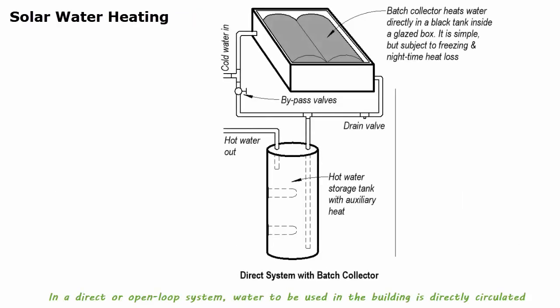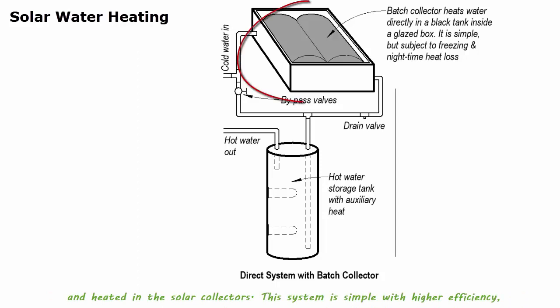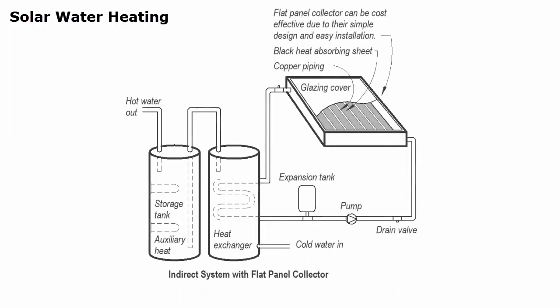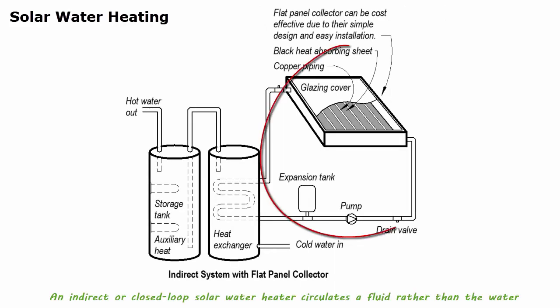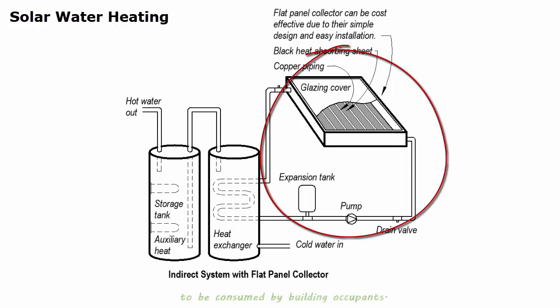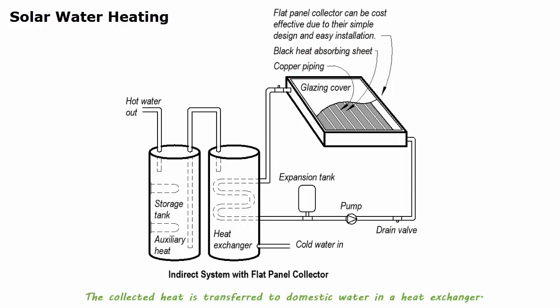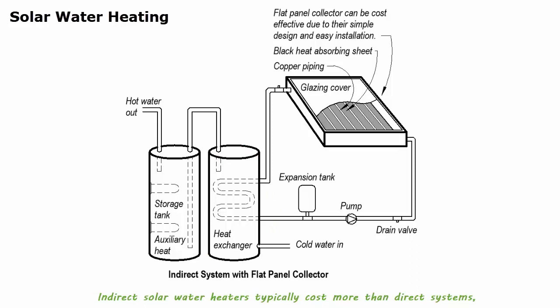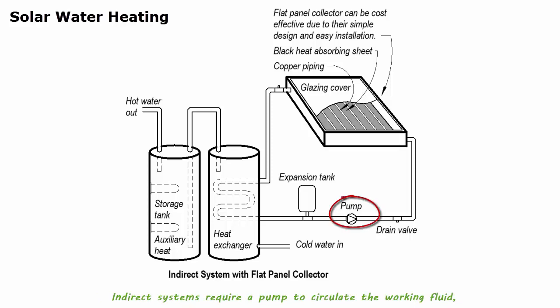In a direct or open loop system, water to be used in the building is directly circulated and heated in the solar collectors. This system is simple with higher efficiency, but water is subject to freezing and potential contamination. An indirect or closed loop solar water heater circulates a fluid rather than the water to be consumed by building occupants; the collected heat is transferred to domestic water in a heat exchanger. Indirect solar water heaters typically cost more than direct systems but are more resistant to freezing, making them popular in colder climates. Indirect systems require a pump to circulate the working fluid, which consumes energy and needs maintenance.